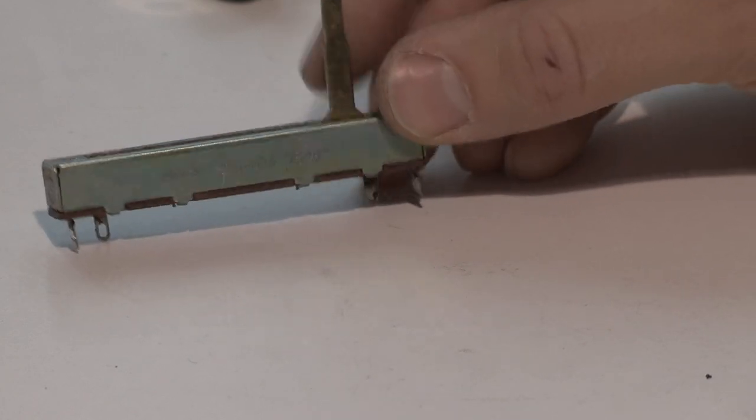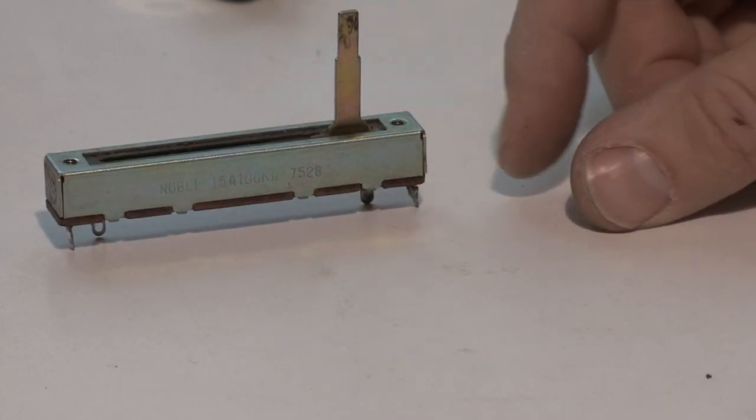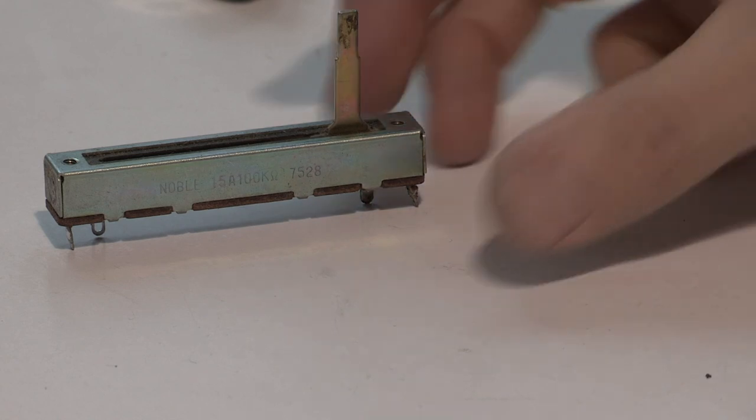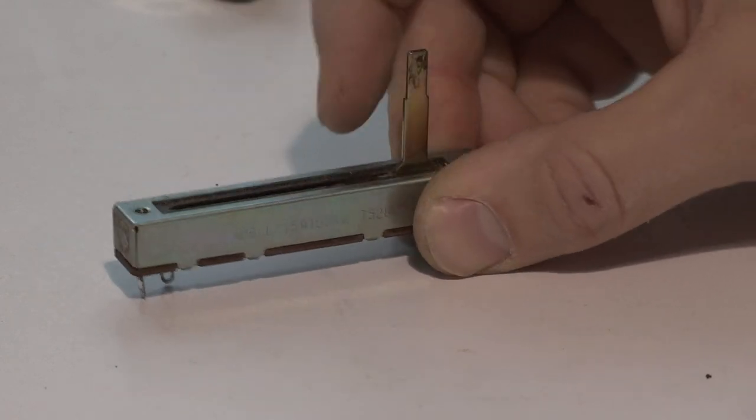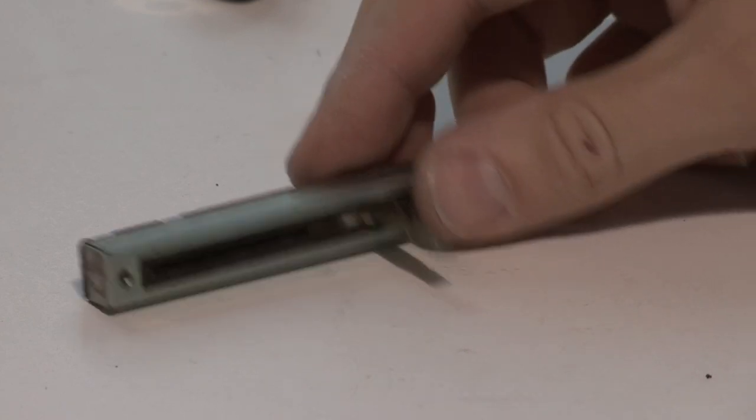And finally a sliding potentiometer. The operating principle is the same as a rotating potentiometer. But with this one you can slide this wiper on the track and the track can be carbon, for example.